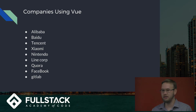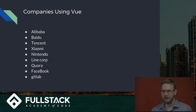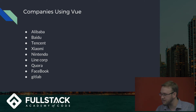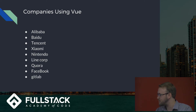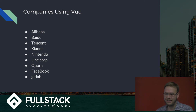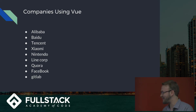Here are some companies that use Vue. As you can see, there are a lot of Asian companies — it's more popular overseas than in America. There's a good list of names there. Alibaba is one of the biggest companies in the world. You've got Nintendo, GitLab. And, funnily enough, Facebook — they use Vue on one of their news feed pages. I thought that's hilarious.